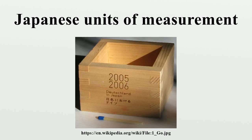Shaku units are still used for construction materials in Japan. For example, plywood is usually manufactured in 182 cm x 91 cm sheets, known in the trade as Sabarakuhan, or 3 x 6 Shaku. Each sheet is about the size of one tatami mat. The thicknesses of the sheets, however, are usually measured in millimeters. The names of these units also live on in the name of the bamboo flute Shakuhachi, literally Shaku 8, which measures 1 shaku and 8 sun.